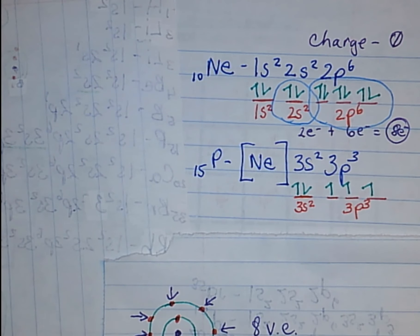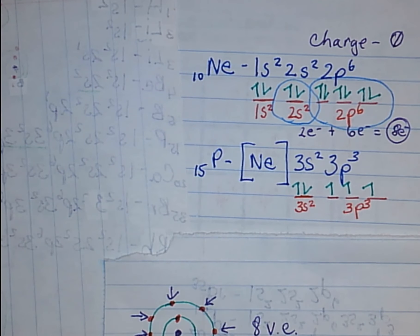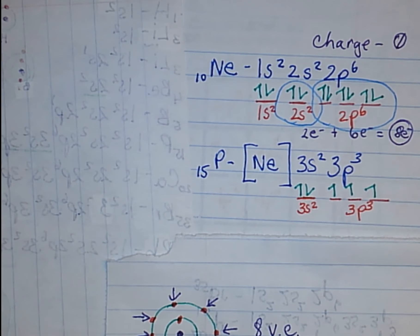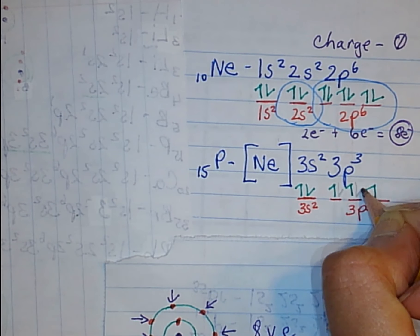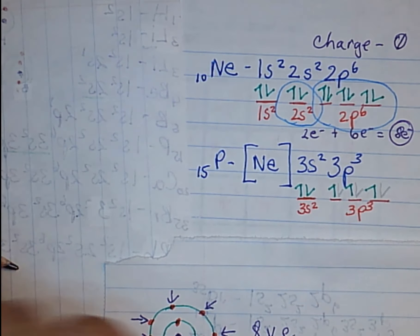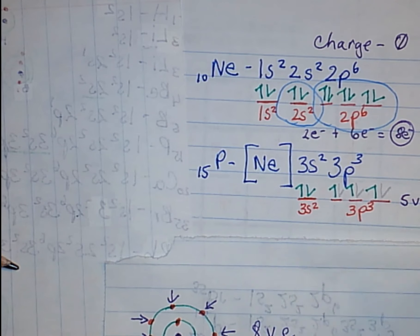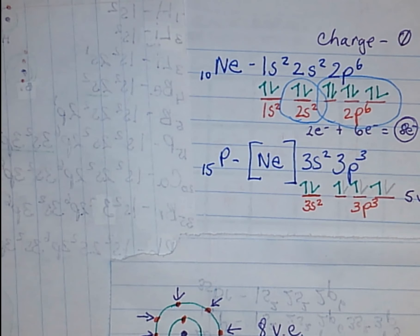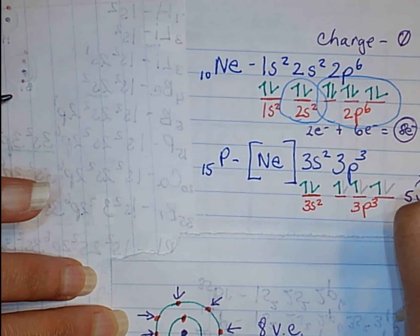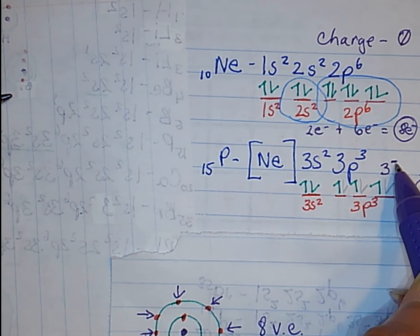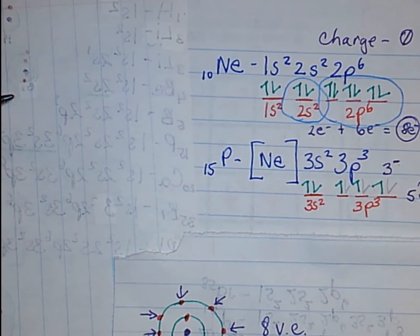Phosphorus does not have a complete octet — it has only five valence electrons in its outer shell. In order to complete the octet for phosphorus, we would need to add three more electrons to it. So phosphorus has a three-minus charge because it needs to gain three more electrons to reach the octet rule.